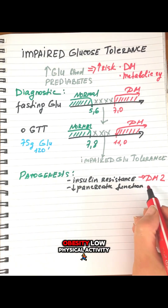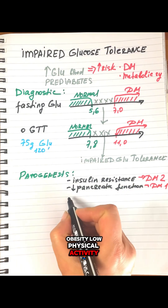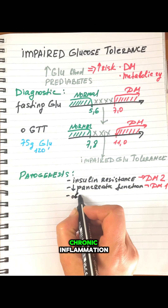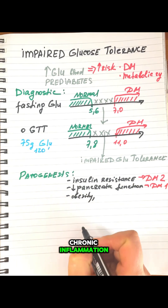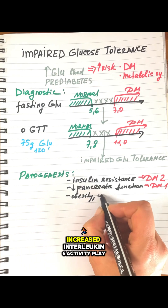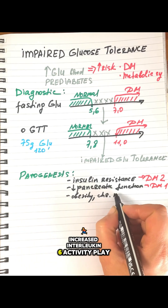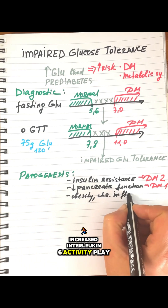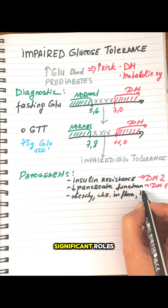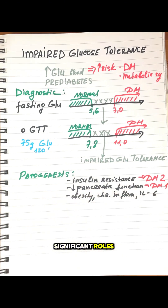Obesity, low physical activity, chronic inflammation, and increased interleukin-6 activity play significant roles.